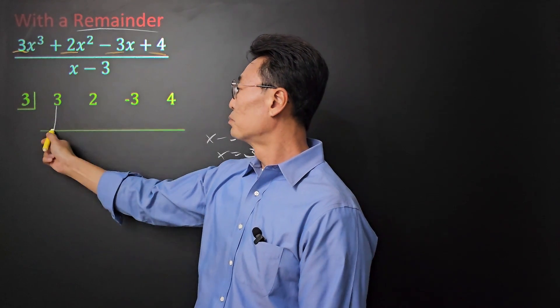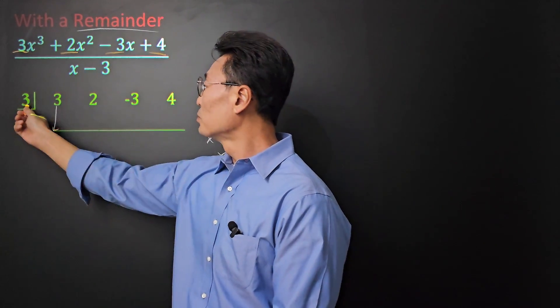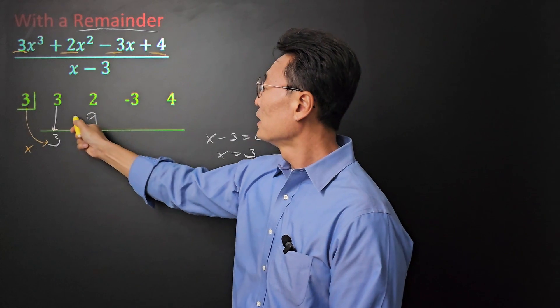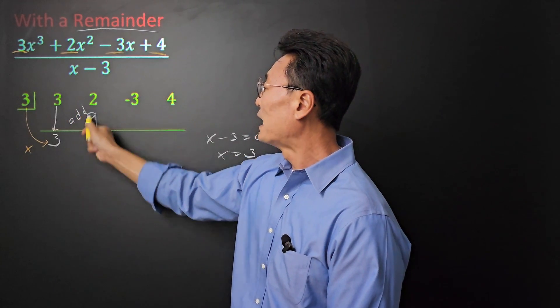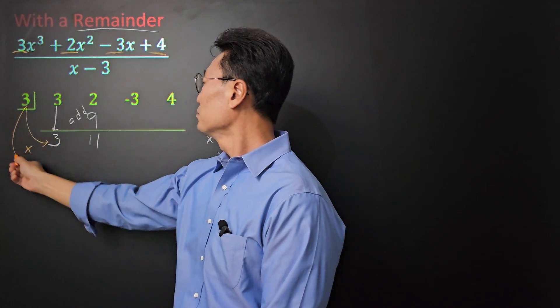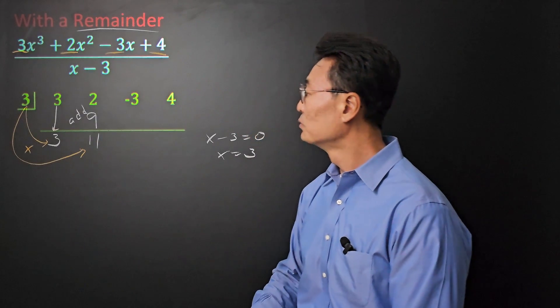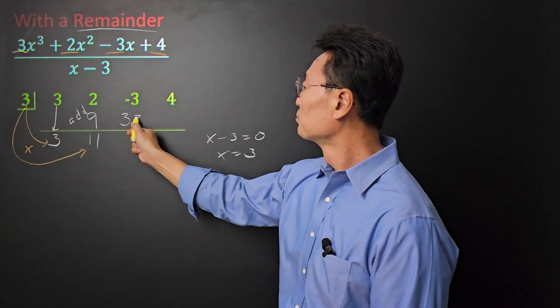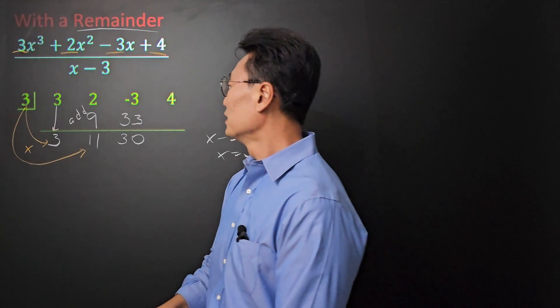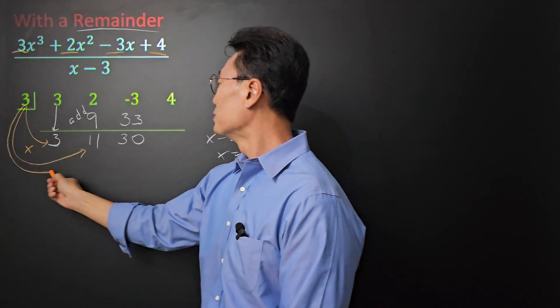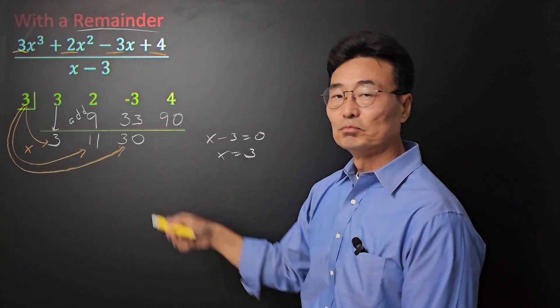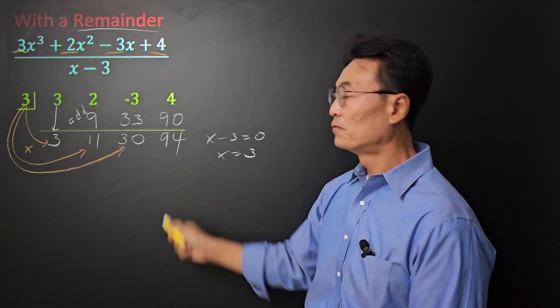Next, as we did before, we got 3, 2, negative 3, and 4, and we're going to put those four numbers right there. Here we go. First, bring down the 3. Next, multiply the 3 to the 3, giving us a 9, and just as before, we're going to add, where we get 11, and then we take that 3, multiply it to the 11, we get a 33, add up and down, we get a 30, and again, take the 3 that we have before, multiply it to the 30, and we get a 90, add up and down, we get a 94.